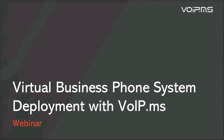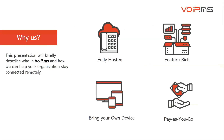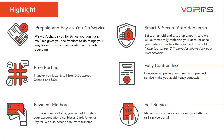A couple of highlights on VoIP.ms: we are a fully hosted service, feature-rich, bring-your-own-device, and pay-as-you-go. Pay-as-you-go means you pay only for the service that you use. We don't charge a recurring monthly fee except for phone numbers (DIDs) and maybe a virtual PRI if you subscribe to it. Smart and secure auto-replenishment lets you set up auto payment to top up your account once you reach a specific threshold — it's limited to one top-up every 24 hours for your security.